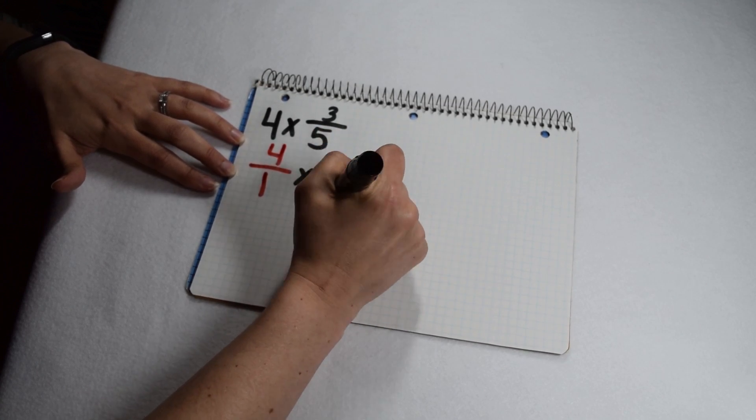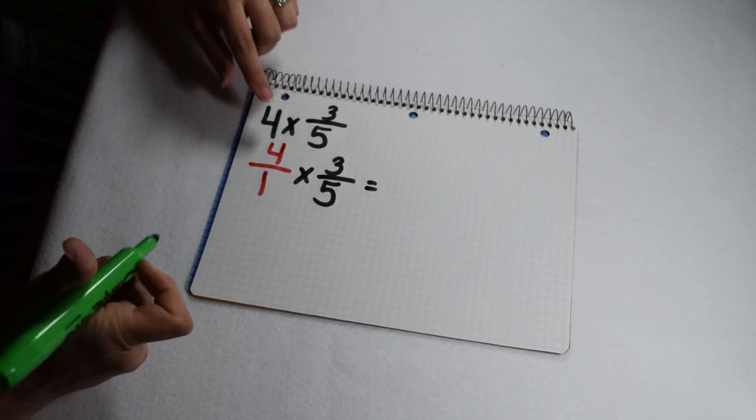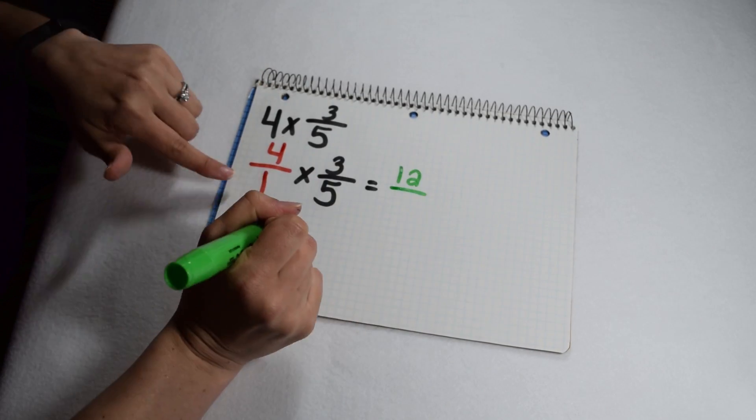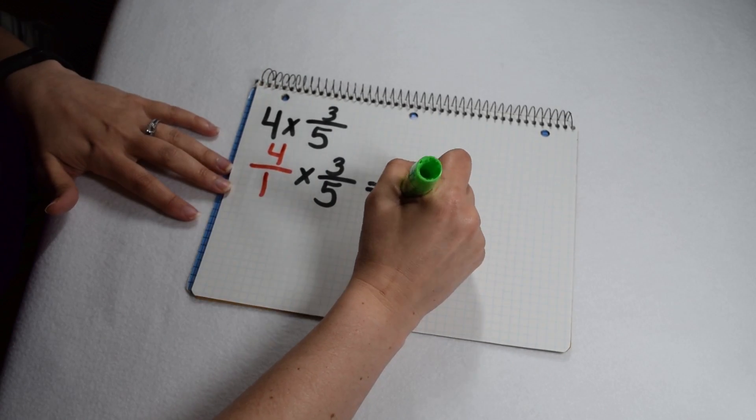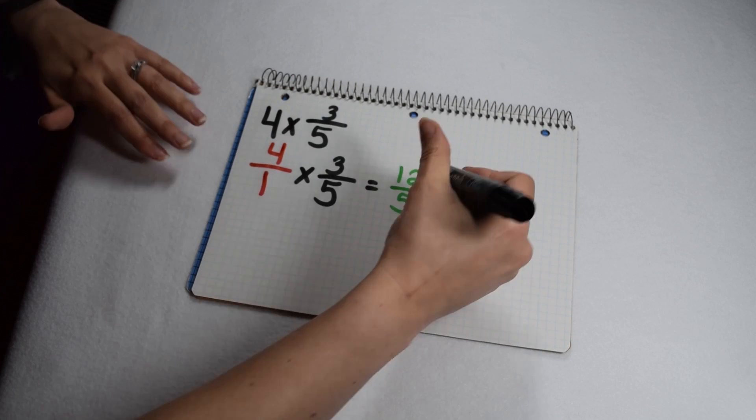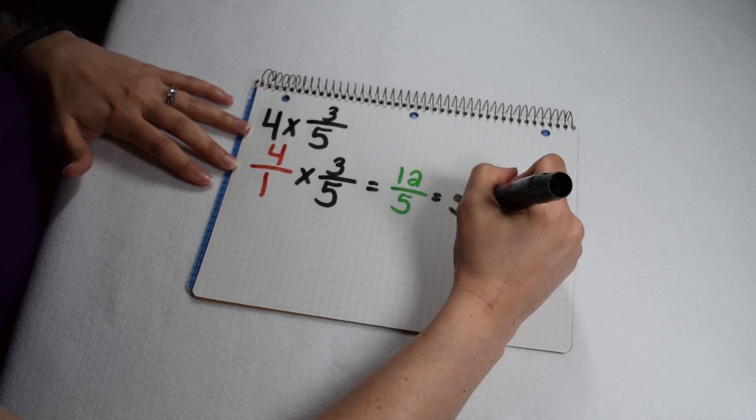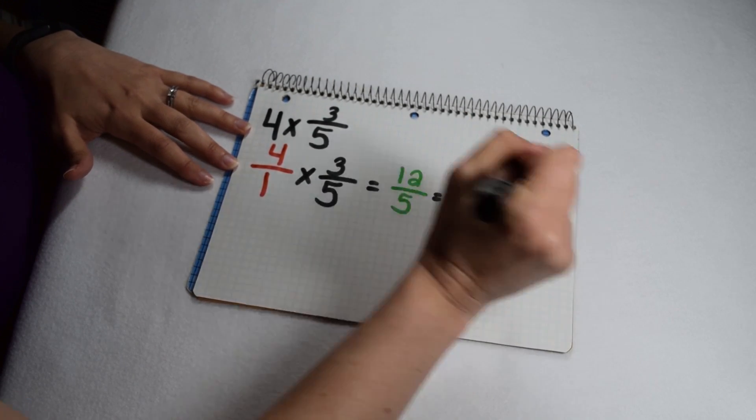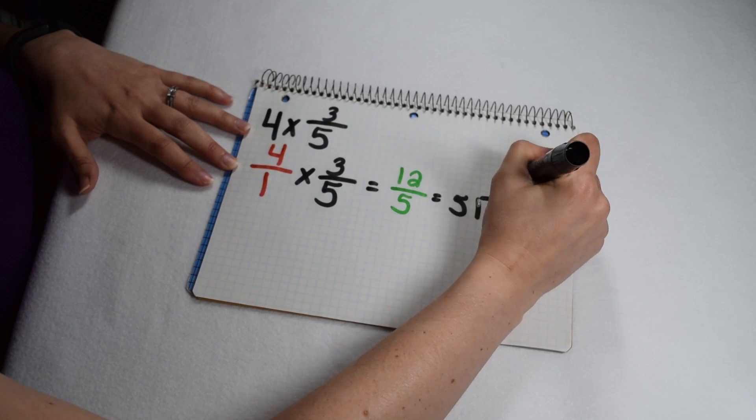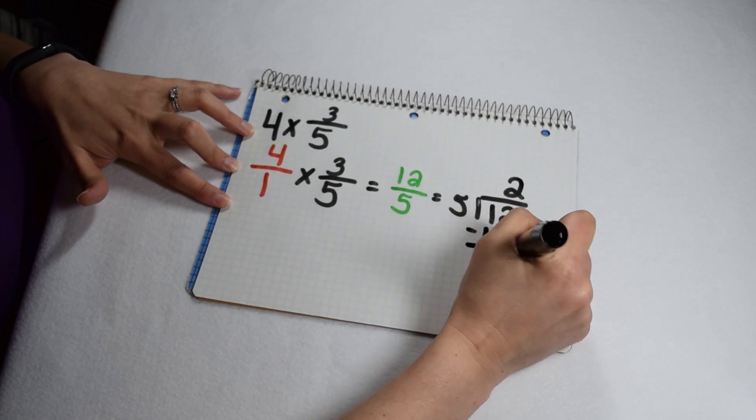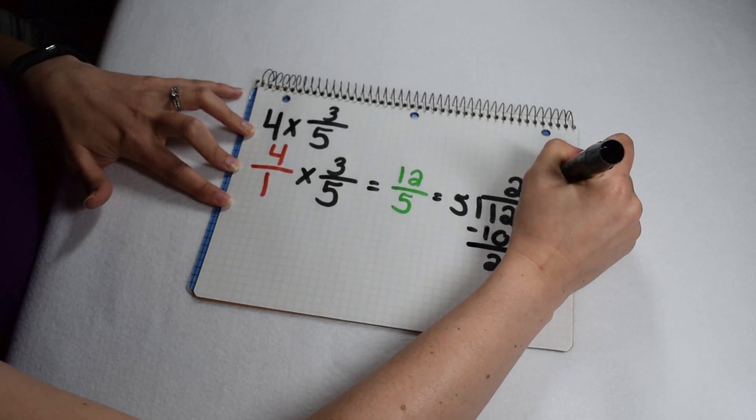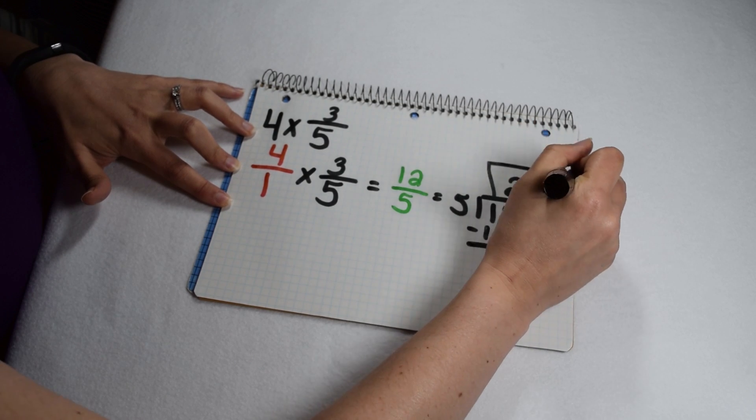So now I can multiply numerator times numerator to give me twelve, and denominator times denominator to give me five. Twelve fifths is an improper fraction. We can divide twelve by five to make a mixed number. Five goes into twelve twice with two left over, so that two becomes my numerator and five stays my denominator. So in lowest terms, my answer is going to be two and two fifths.